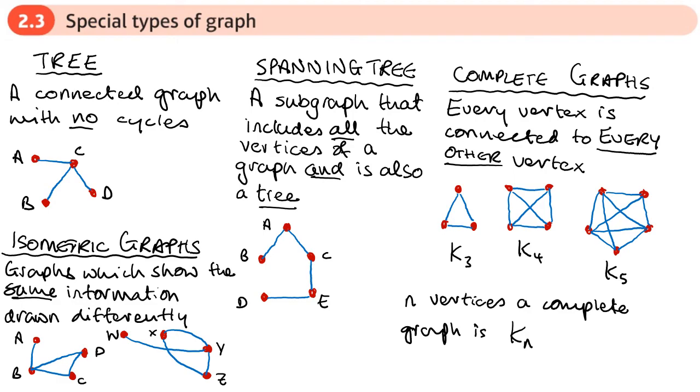And lastly, we're going to look at isometric graphs. These are graphs which show the same information, but they're just drawn differently. So these two graphs here are isometric. They actually represent the same information, but drawn in different ways.